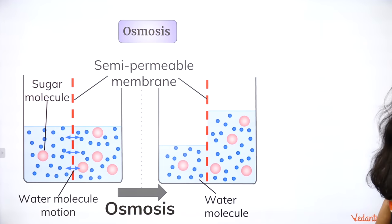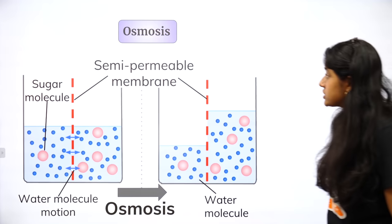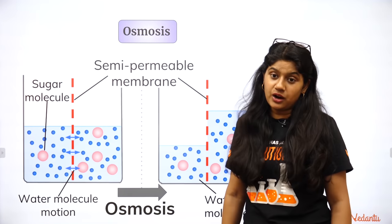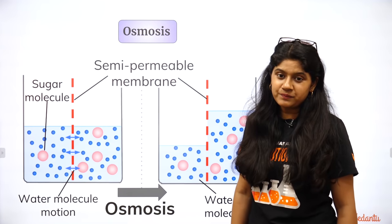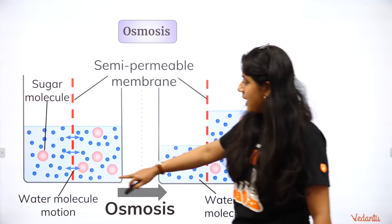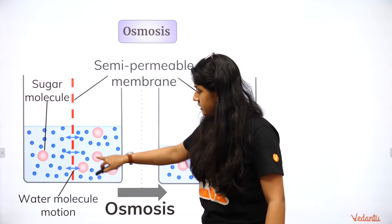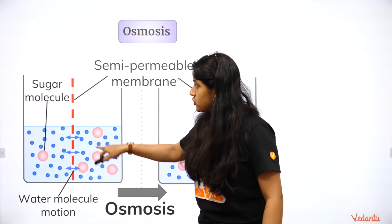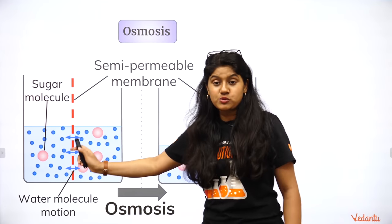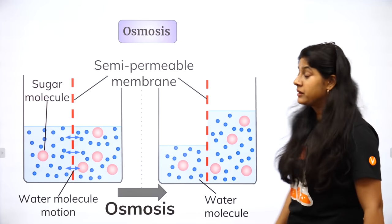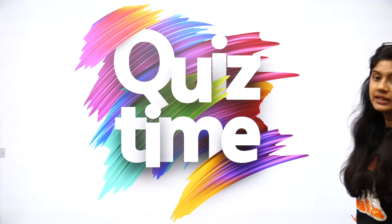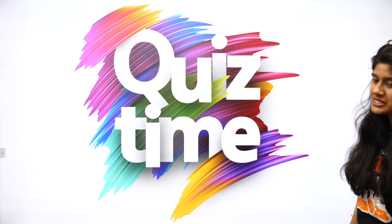In osmosis, sugar molecules cannot pass through the membrane — only water molecules can pass through the semi-permeable membrane.